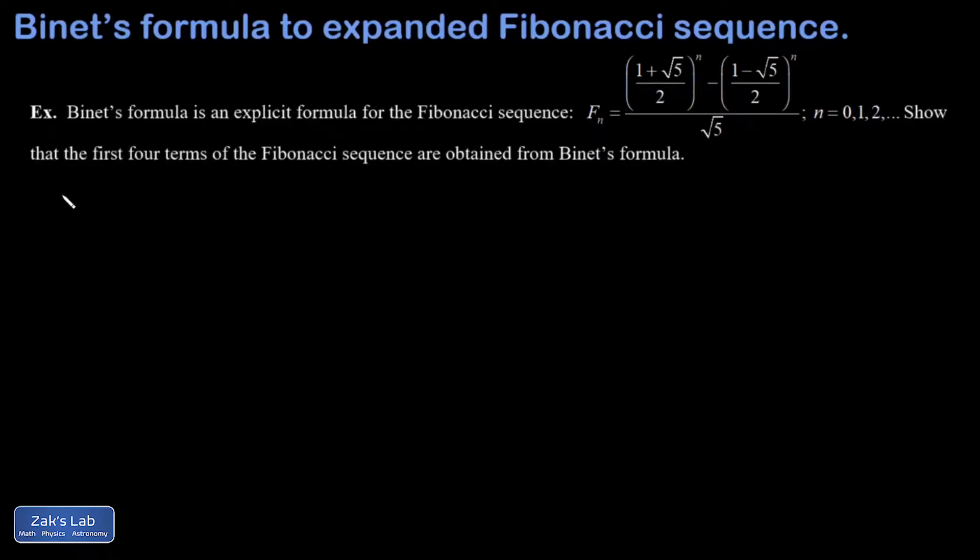In this problem, we're given an explicit formula for the Fibonacci sequence. This is called Binet's formula. And just as a reminder, the Fibonacci sequence is 0, 1, 1, and then you always take the sum of the previous two terms to get the next term.